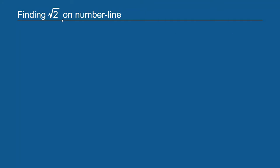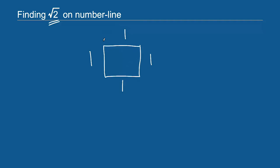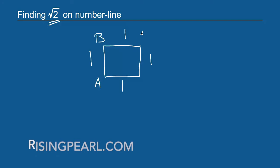In order to find out how to plot square root 2 on the number line, we first need to determine how long square root 2 is. Imagine we have a square where each side is one unit — it could be one millimeter, centimeter, or meter. Let's name the square: this side is A, this is B, this is C, and this is D.